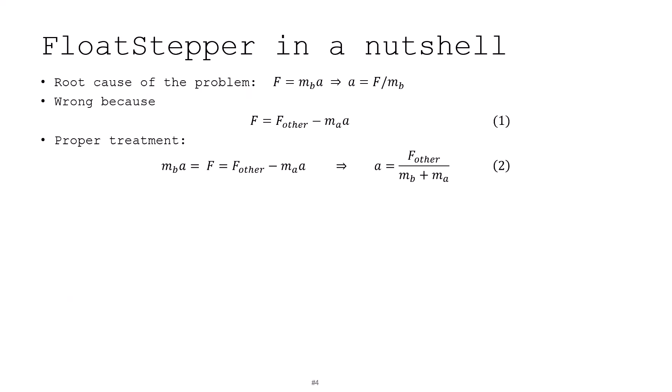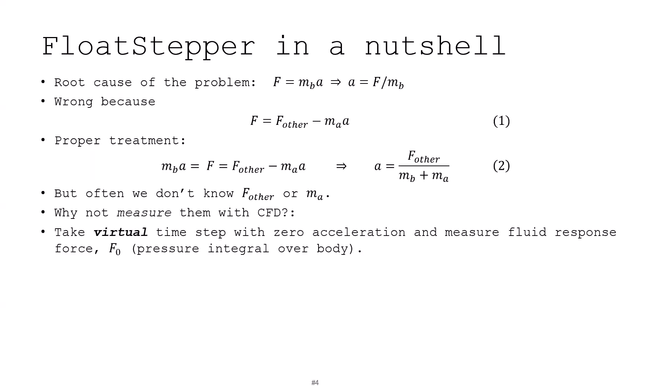So why don't we do this in CFD simulations? Well, that's because typically we do not know what F_other and M_A are. But in CFD, and that's the main point of FloatStepper, we can do whatever we want before we take our actual time step. So why don't we try to measure these two guys? And the way we'll do that is to first take a virtual time step, so not a real time step, with zero acceleration of the body, and then measure the fluid force response. We will call that F_0. That's just, in simple cases, just the pressure integrated over the body. Now, if we look at what we should get according to our equation one here, then we can see A is zero, then what we just measured, F_0, must be equal to F_other, so everything else.